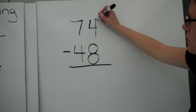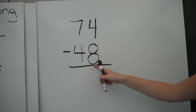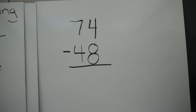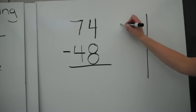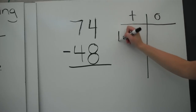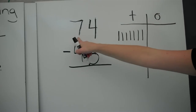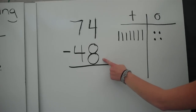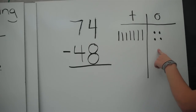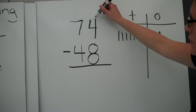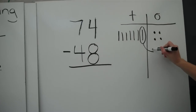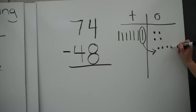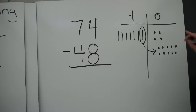The next one we're going to try is seventy-four minus forty-eight. Seventy-four is our total and we are taking forty-eight away. I'm going to draw my place value blocks — seven tens, four ones. It says I need to take eight ones away, but I don't have eight ones, so I need to regroup. I'm going to take a ten and put it into the ones column. Now I have fourteen ones.